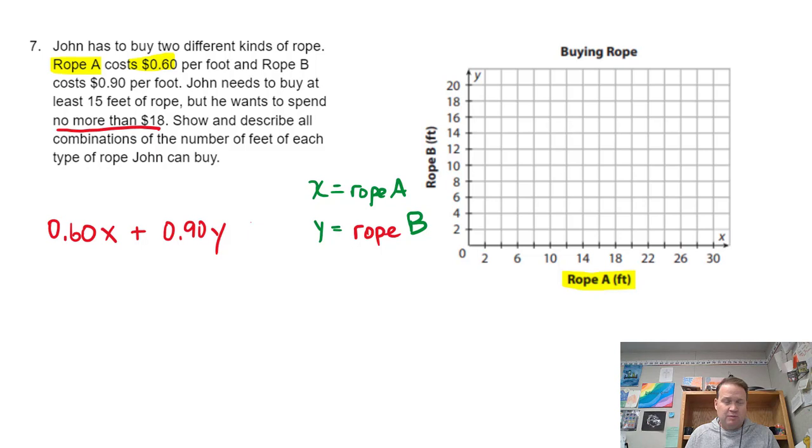So I got to spend less than $18. But it says I can spend no more than, which means I could spend $18. And so that means that this is going to have to be underlined. And so there's the inequality that we're going to use for one line.